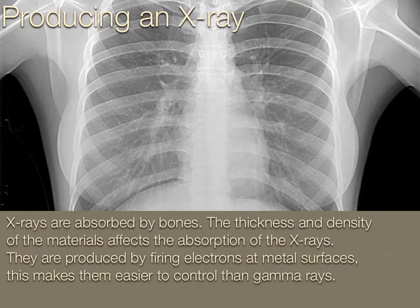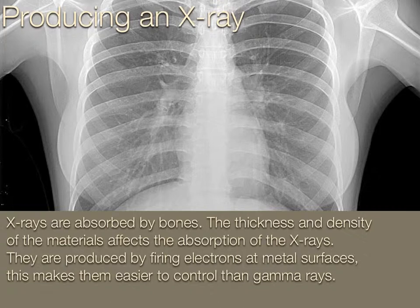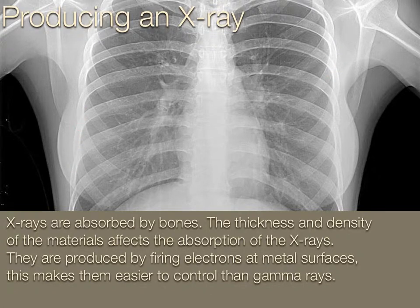Let's think about how an X-ray works. X-rays produce pictures of bones because X-rays are absorbed by the bones. The areas that are black are where X-rays have passed through and not been obstructed. The areas that are white are where they've been absorbed by the bones, and that's why they show up. Some of the areas are grey because of the thickness and density of the materials — the bone in this case — which affects how much X-rays are absorbed.